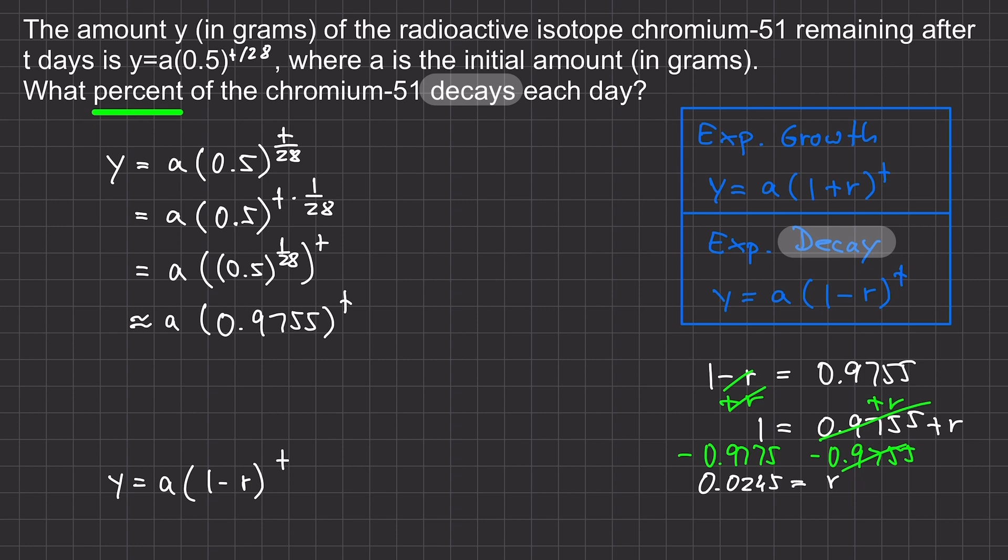So, the daily decay rate is approximately 0.0245 or 2.45%. And we are done with this problem.